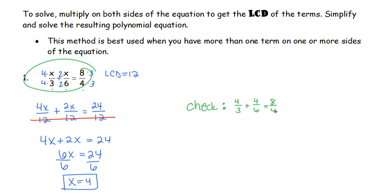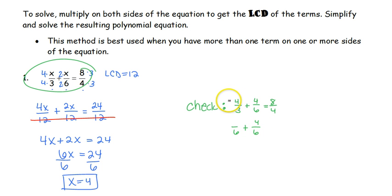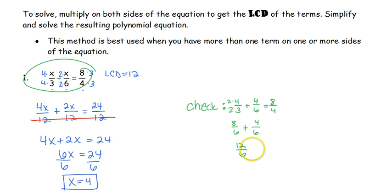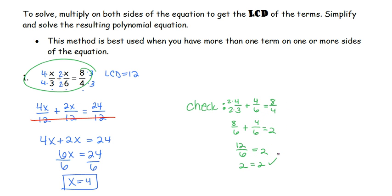Finding the LCD between the two fractions on the left, which is 6, the second piece doesn't change. We multiply the first piece by 2, giving 8 plus 4 over 6, which is 12 over 6, reducing to 2. On the right-hand side, 8 over 4 is also 2. So our solution x equals 4 works.